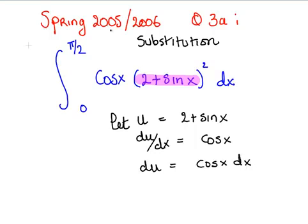That is going to be very useful very shortly, because in the expression we have a cos(x) term and a dx term, and together we can replace them with du. So let's just write this out again. By the way, this is a definite integral with limits of 0 to π/2.